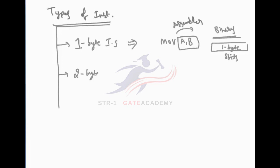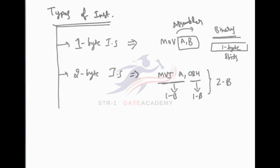Two-byte instruction set: for example, MVI A,08H. After converting to machine code, the opcode occupies one byte and the data 08H also occupies one byte — total two bytes of memory. Whenever the operand consists of 8-bit data, the instruction occupies two bytes and is called a two-byte instruction set.